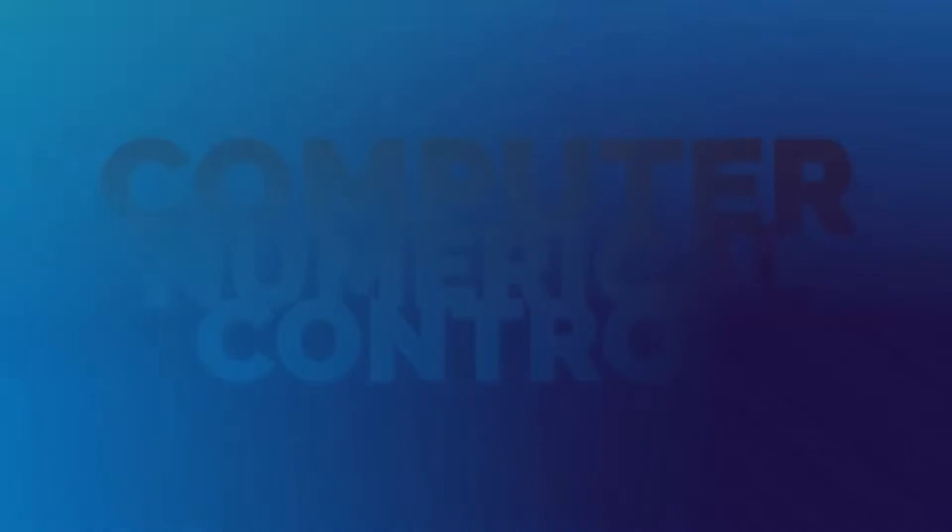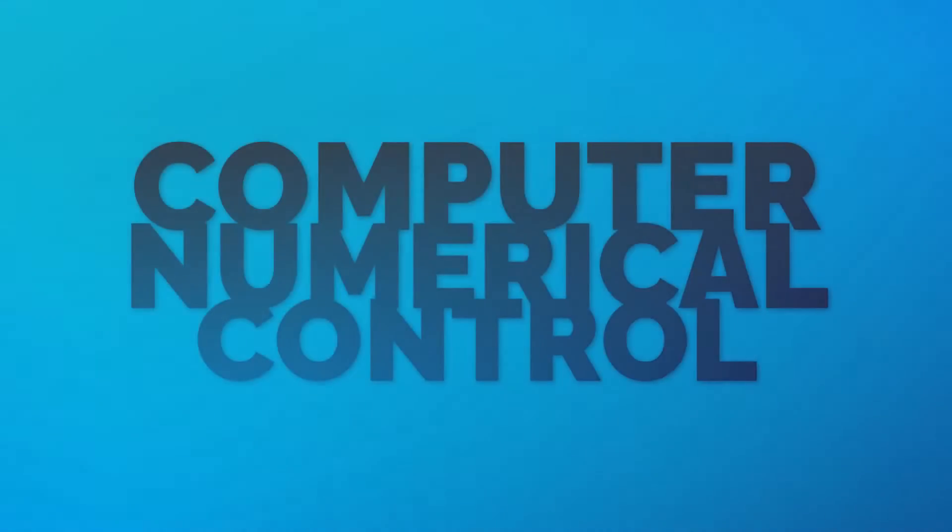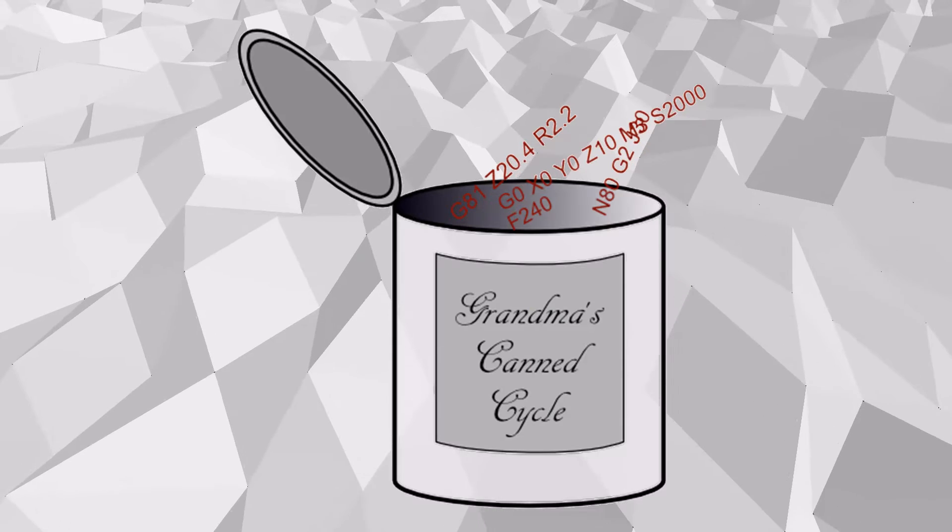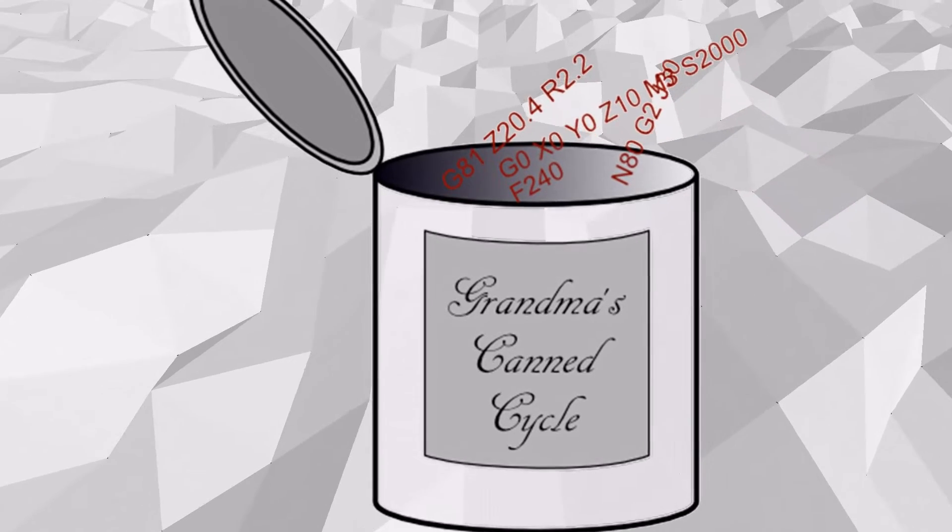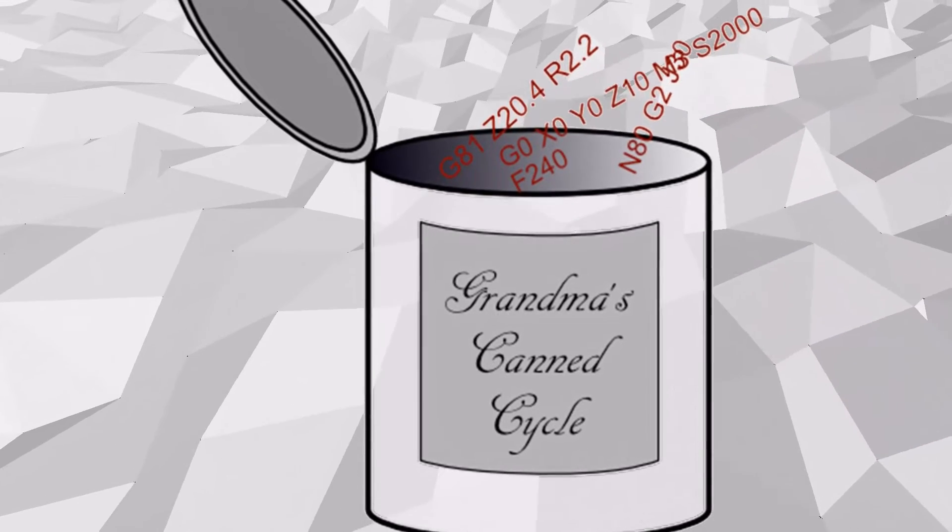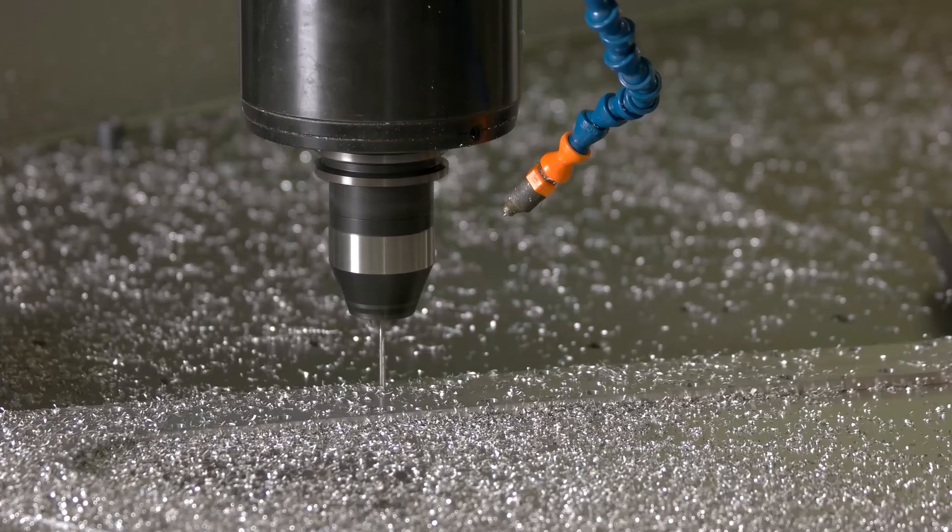Canned cycles are pre-programmed routines for common machining operations, such as drilling, boring, or tapping. They encapsulate a complex series of actions into a single command, making our code more efficient and readable.